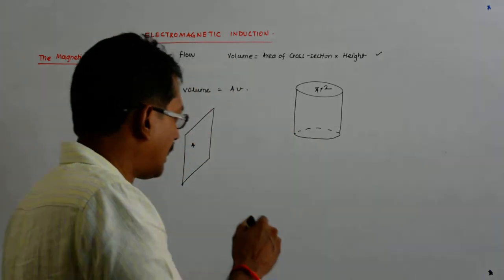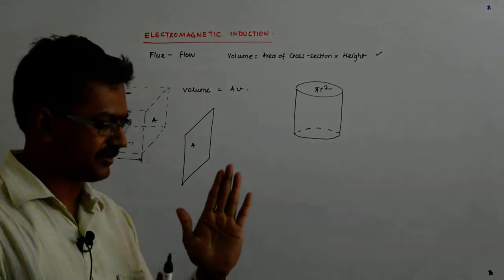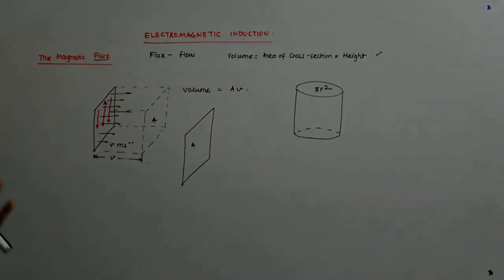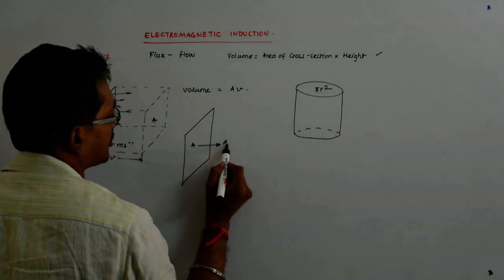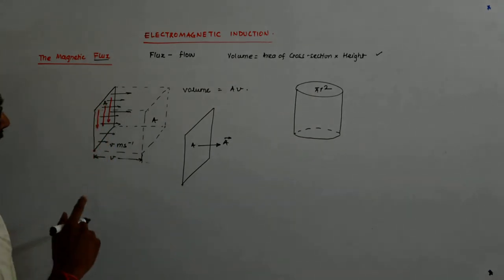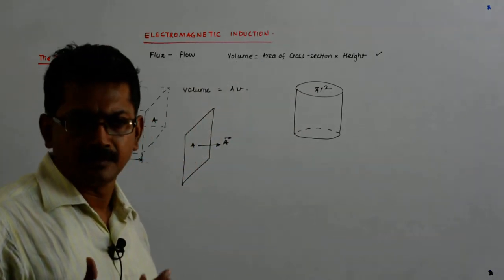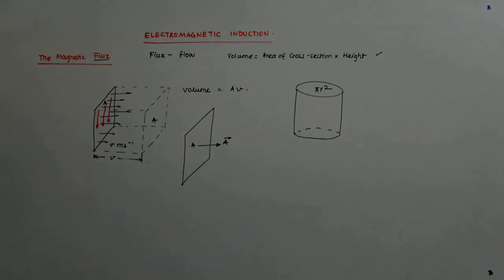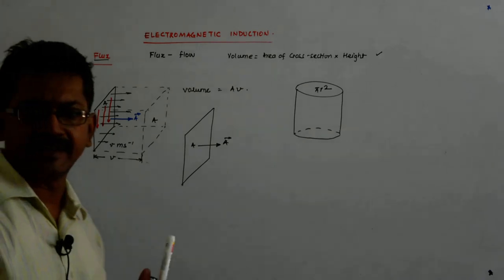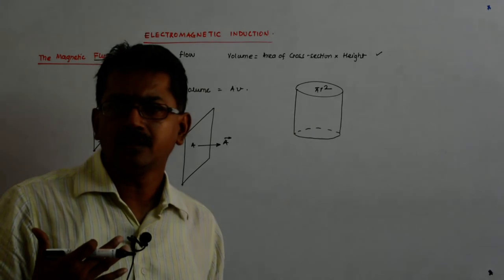Now, what happens? The perpendicular components - those which are perpendicular to the plane of the area - they were contributing the maxima. That means those which were parallel to the area - in blue I'm drawing the area vector - the component of velocity that was parallel to the area vector was contributing the maximum, while the component of velocity that was perpendicular to the area vector was contributing nothing. Correct?